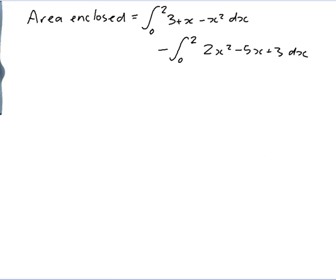And I don't have to do those two integrals separately I can combine them into one integral like this. The integral from 0 to 2. 3 plus x minus x squared minus 2x squared minus minus 5x minus 3.